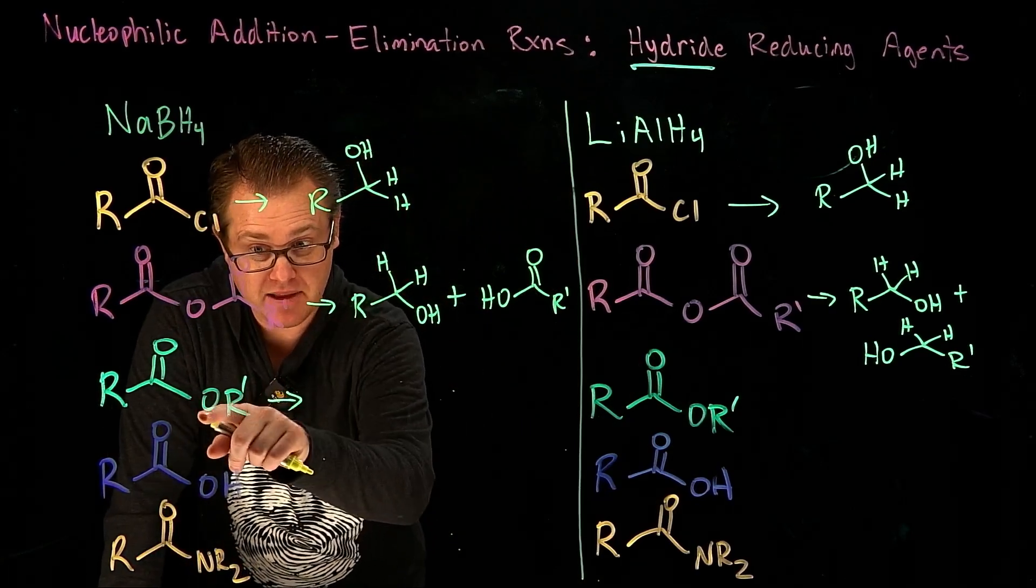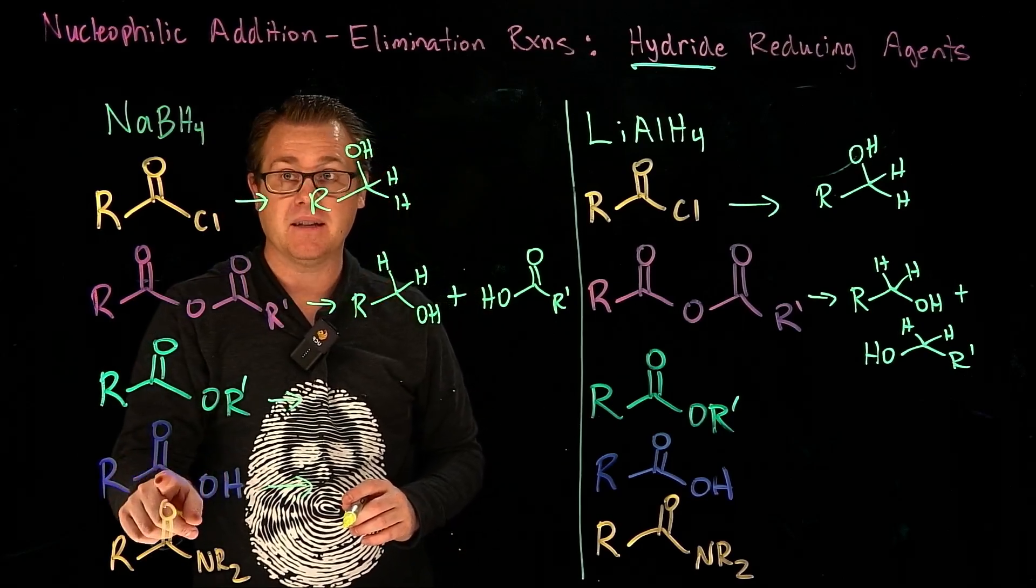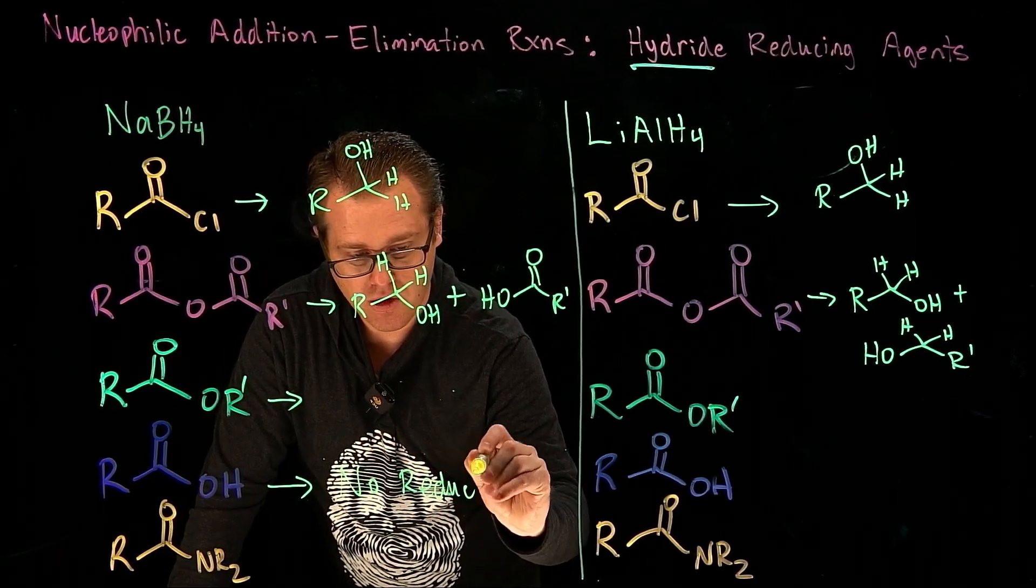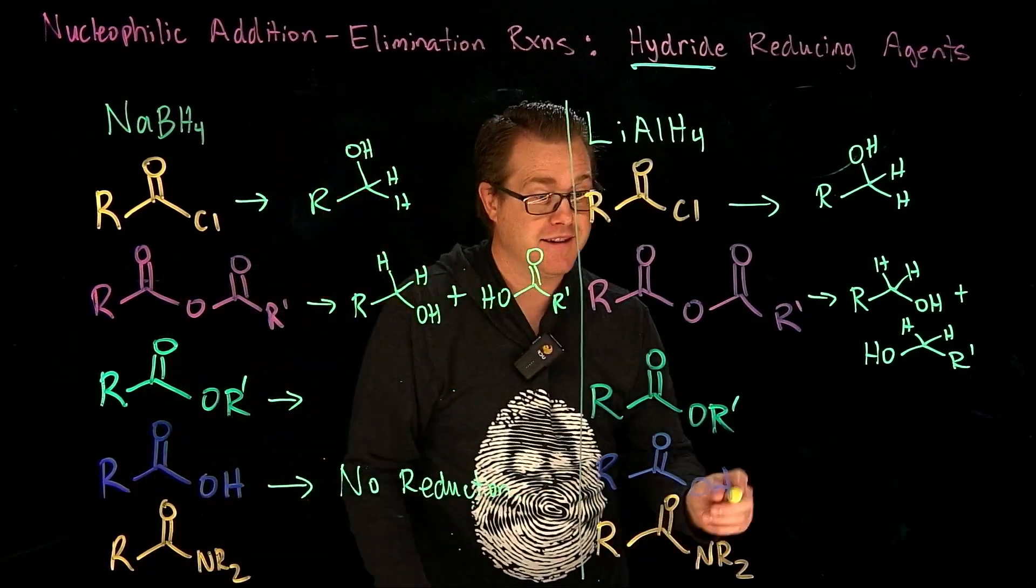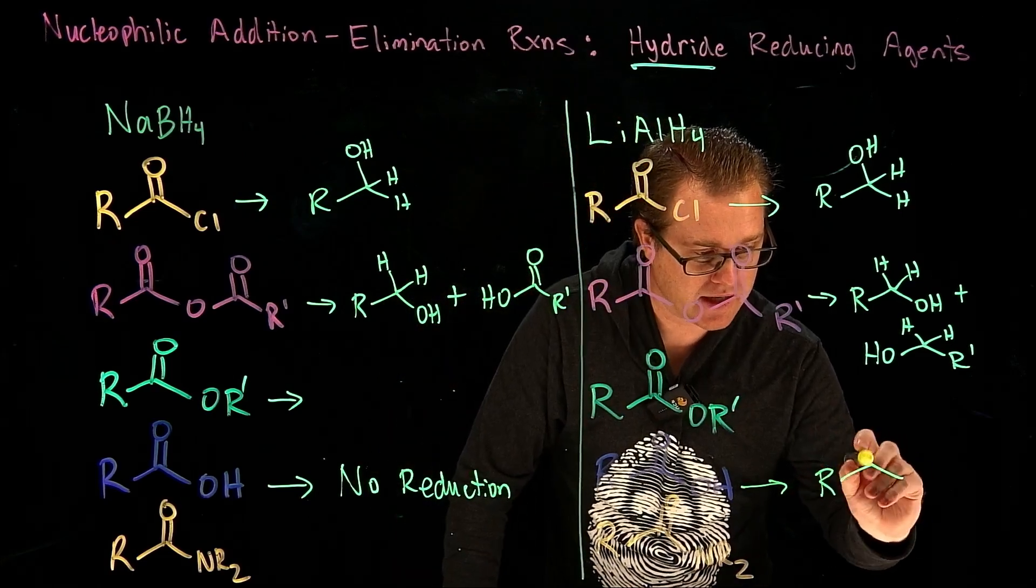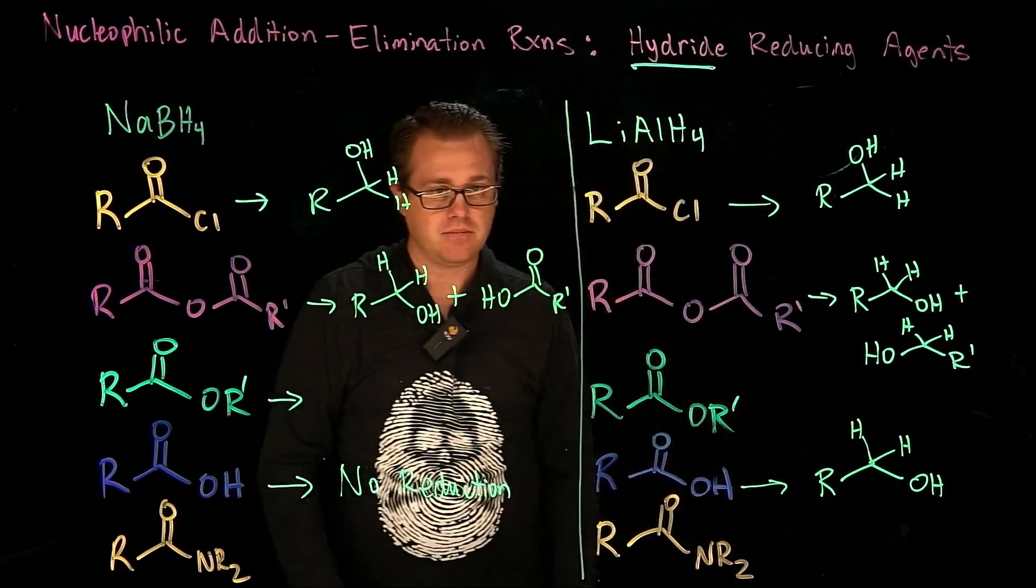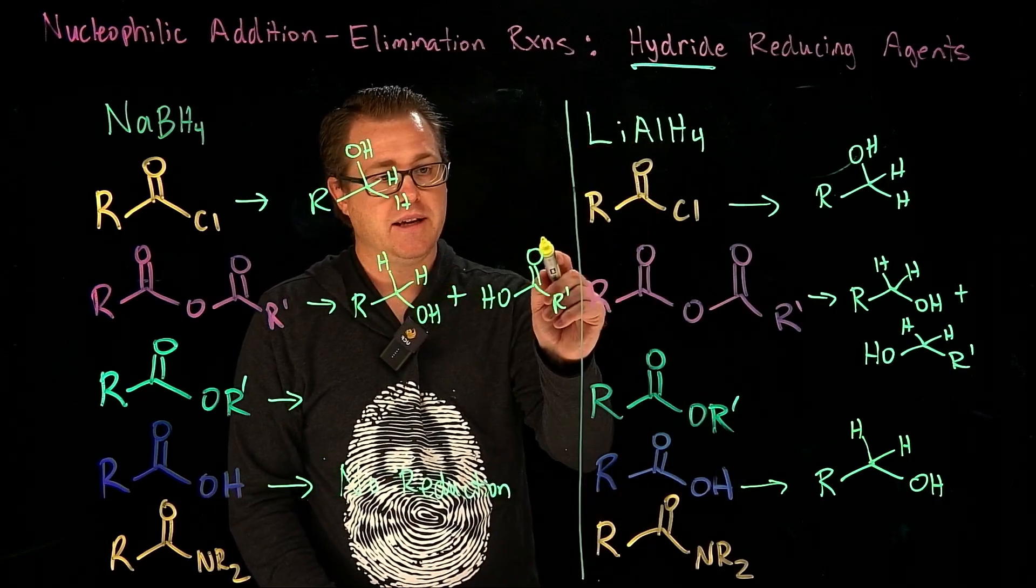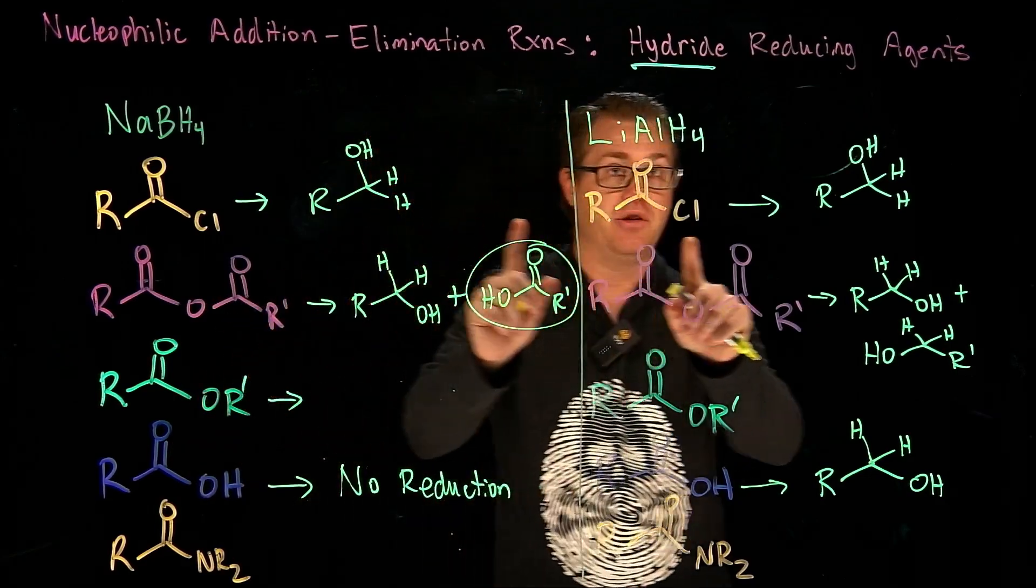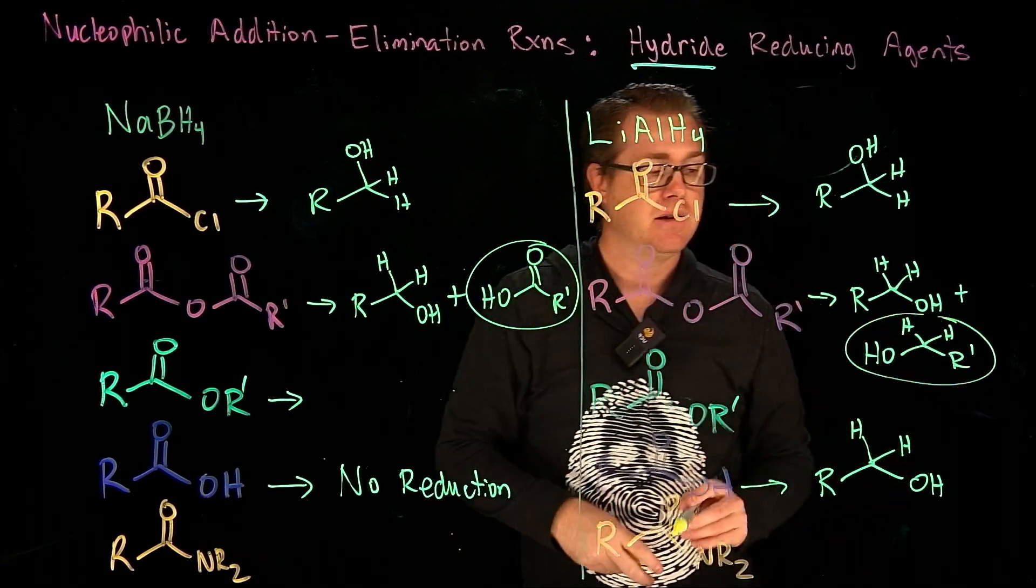So when you take an acid anhydride and treat it with lithium aluminum hydride, you're going to get two alcohols. But with sodium borohydride, you're only going to get one and a carboxylic acid. And why is that? If you try to reduce a carboxylic acid with sodium borohydride, nothing happens. No reduction. But with lithium aluminum hydride, there is a reaction slash reduction, and you are going to generate an alcohol.